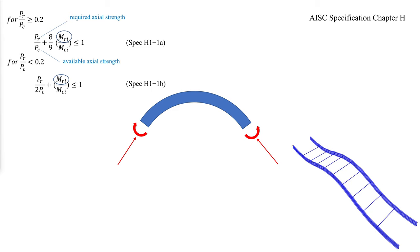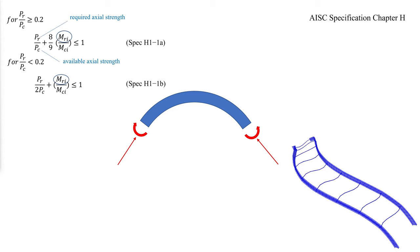For in-plane buckling, there is only one axial load ratio for the arc, calculated with the required axial load PR equal to the maximum axial load within the arc. For out-of-plane buckling, both the required load and the available load PC can vary between unbraced segments within a curved member. The governing axial load ratio for each arc segment is the maximum of the out-of-plane axial load ratio for that segment and the in-plane axial load ratio for the entire arc. Both in-plane and out-of-plane buckling strength calculations were discussed in the previous video.